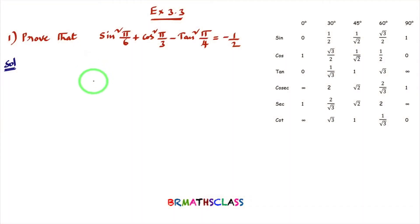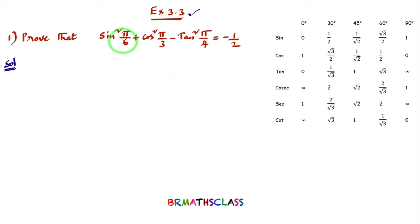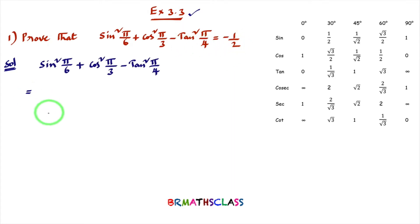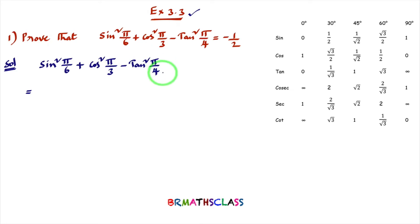Hello friends, I am Balaji Rao. Welcome to BR Max class. This is exercise number 3.3 in trigonometry of class 11. We need to prove that this expression equals minus 1 by 2. I considered the LHS part: sin²(π/6) + cos²(π/3) - tan²(π/4).